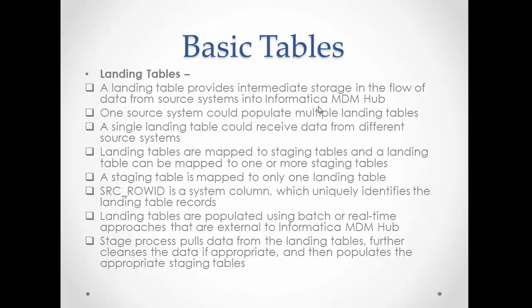A landing table can be mapped to one or more staging tables. However, a staging table is mapped to only one landing table — one staging table cannot have multiple landing tables. The SRC_ROW_ID is a system column present in the landing table, populated along with the last updated date. Landing tables are populated using a batch or real-time approach — batch via an ETL process, or real-time via web services. The stage process pulls data from the landing table, standardizes it, applies cleanse functions, and pushes records to the staging table.